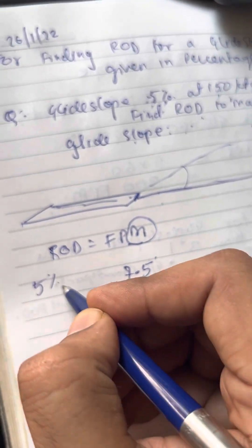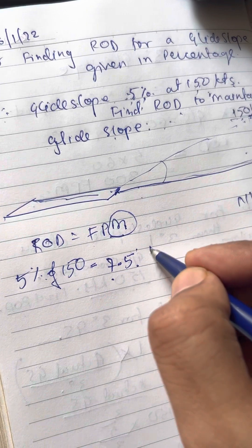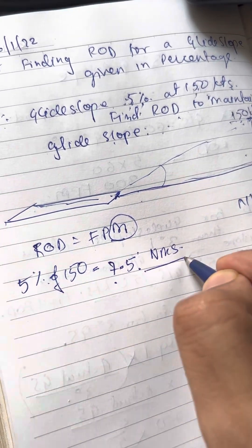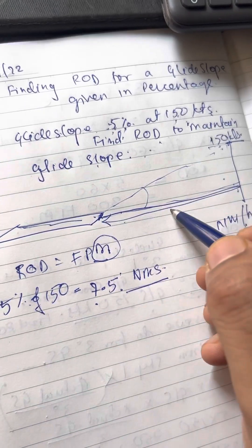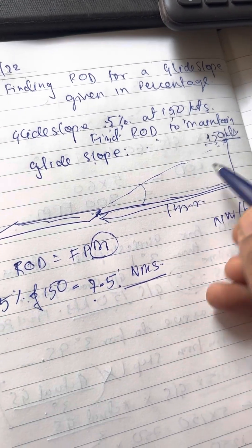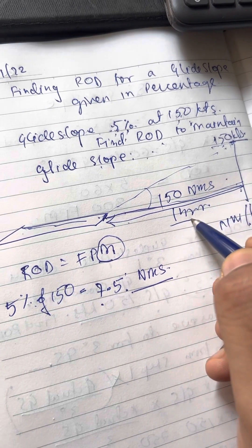5% of 150 knots gives me 7.5 nautical miles. So for every 150 nautical miles traveled in an hour, if I say I have to travel 150 nautical miles in one hour at this speed.